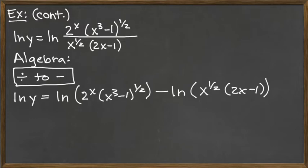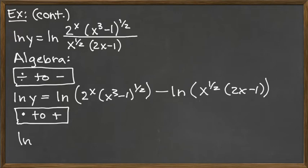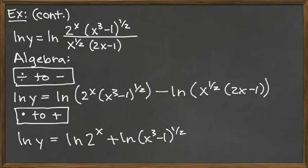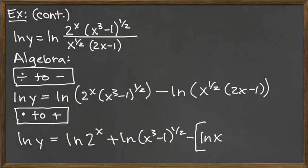Next, in two different places we have a log of two things multiplied, so multiplication switches to addition. Natural log of y equals the natural log of the first term in the product plus the natural log of the second term. Then we have the subtraction sign, and again we have the natural log of two things multiplied together — but we have to be careful because we're subtracting something that is a single term with multiplication, switching it to two terms with addition. So we do need parentheses: natural log of x to the one-half plus natural log of 2x minus 1.